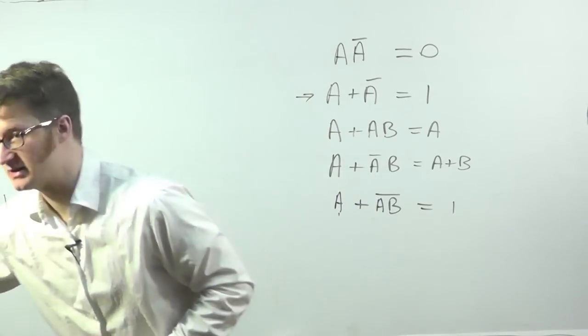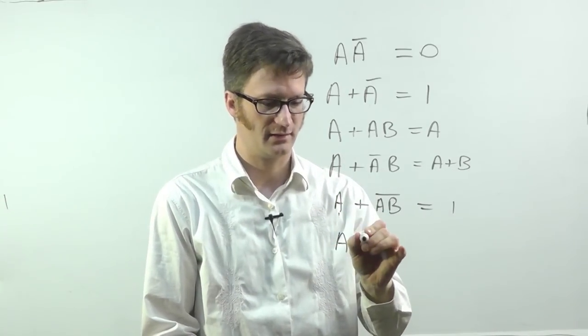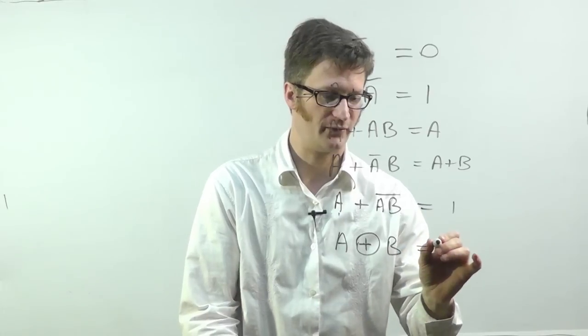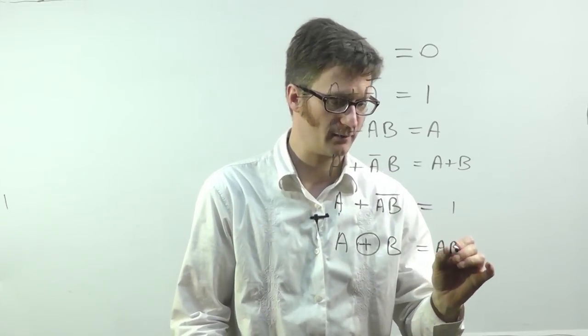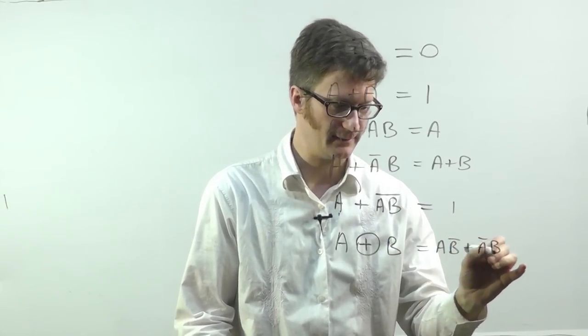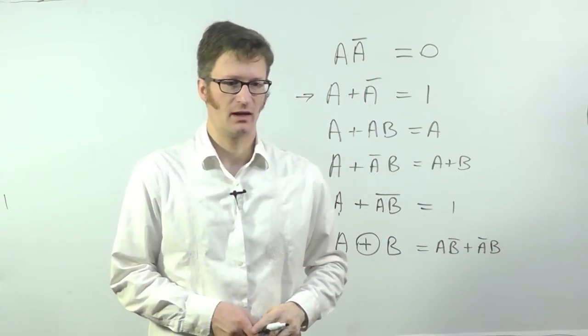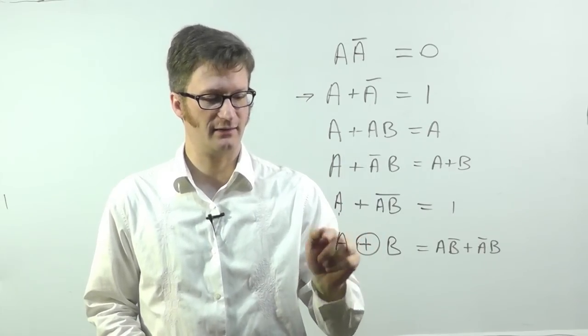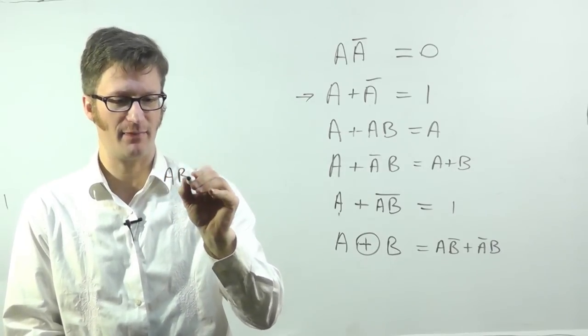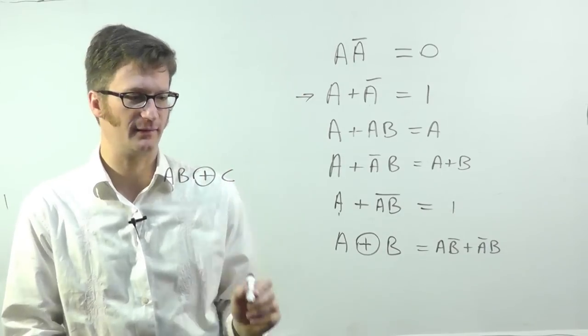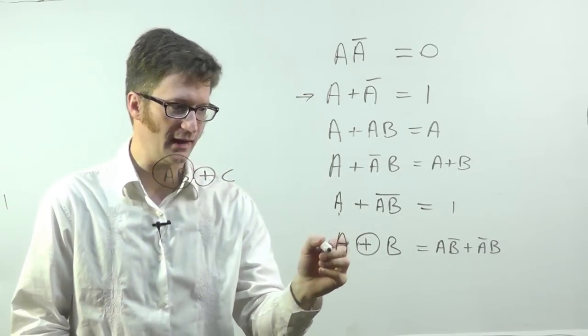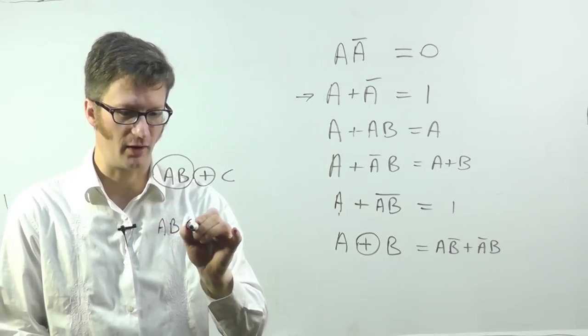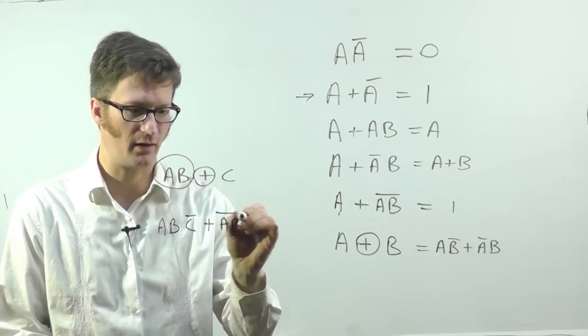There's one final simplification that you often have to do. And that is A exclusive or B. And A exclusive or B works out to be, and this is one you just have to memorize, A B bar or A bar B. For any of these terms, you can consider A to be a variable, but if I had A B exclusive or C, I could consider this to be A. And so what this would work out to be is A B C bar or A B bar C.